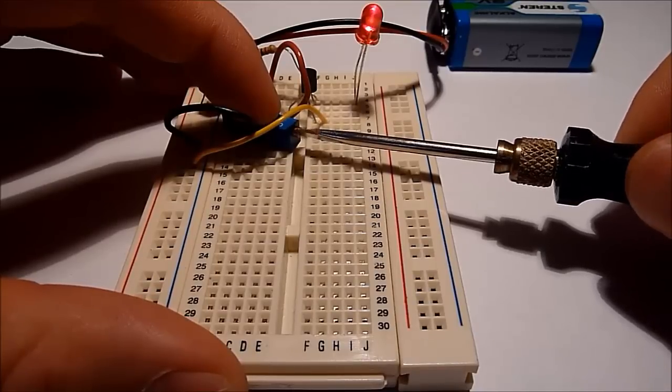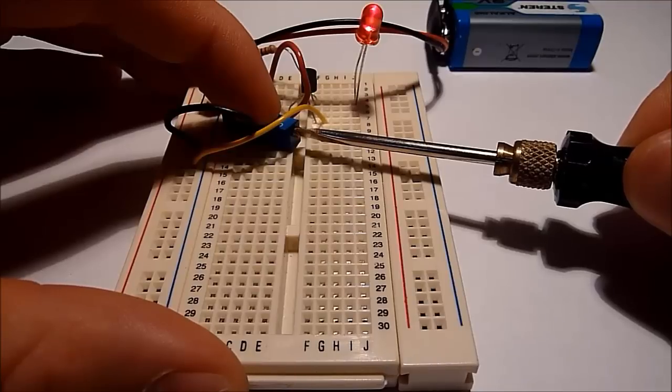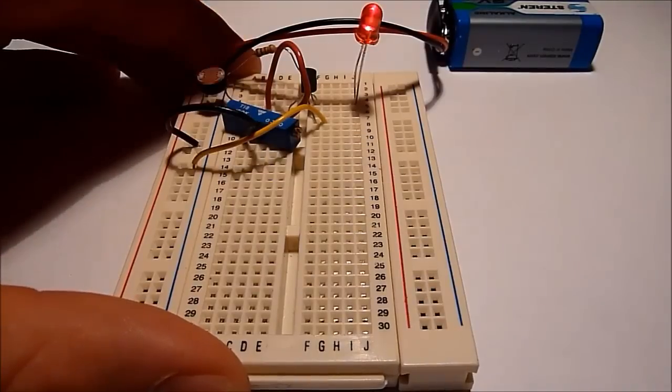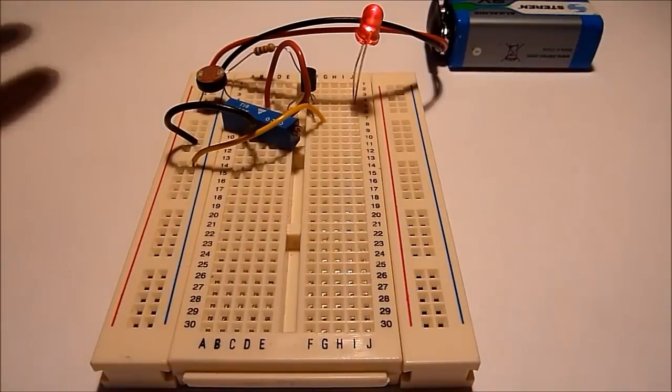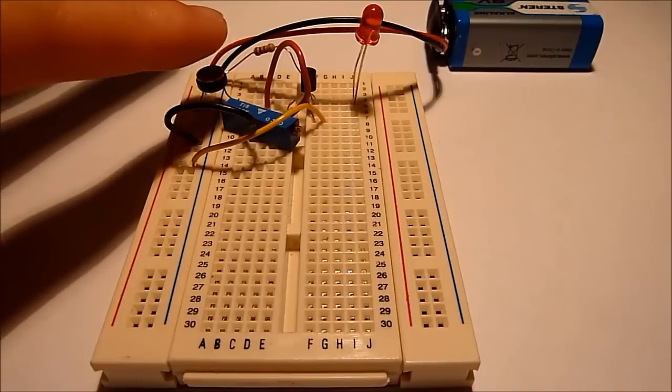There we go. So here, about here, it's a good point. So now, if I put my finger over the light dependent resistor, the LED goes off.